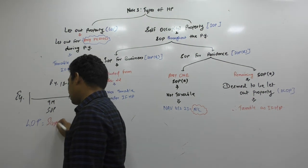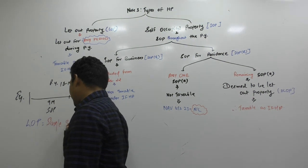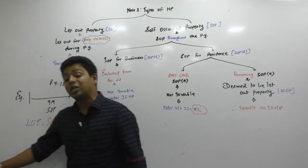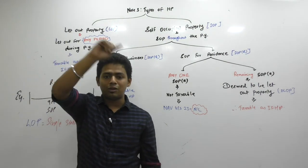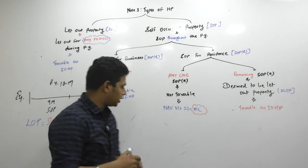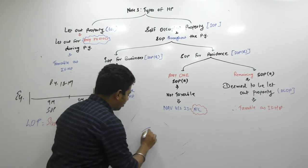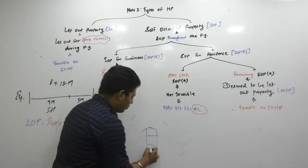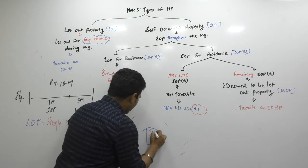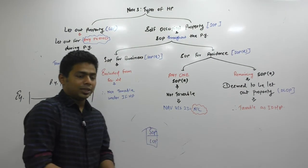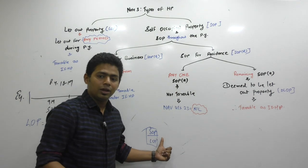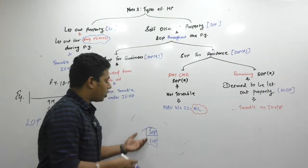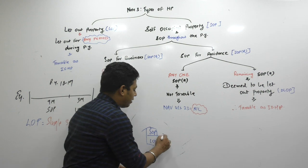This property has a single status. In future, I will be teaching you property with dual status — where the property will be like this: ground floor and first floor. The ground floor will be LOP and the first floor will be SOP. This is partly let out and partly SOP. This property is called partly LOP, partly SOP, because this property has dual status.